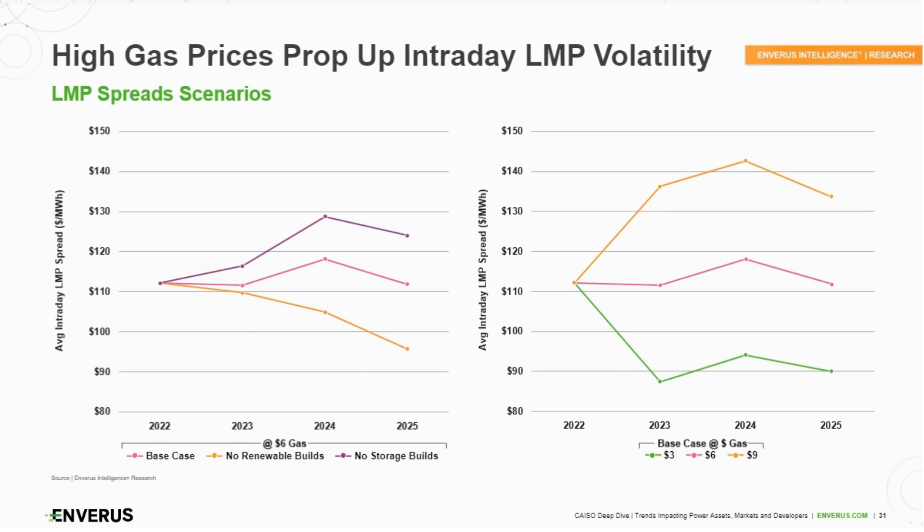We're modeling about a $95 spread as the break-even required by storage assets purely pursuing an arbitrage strategy. So if spreads stay flat at $112 despite all the storage growth, I think we'd view that as quite a positive thing. But as I mentioned, gas prices are an important factor.